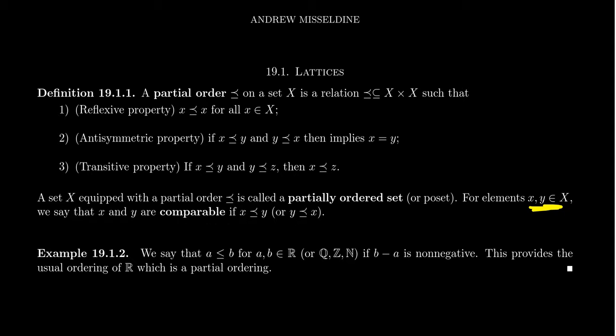The archetype of what a partial order is, is the partial order that exists on the real numbers. We say that two real numbers A and B satisfy this relationship: A is less than or equal to B whenever the difference B minus A is non-negative. So if the bigger number is subtracted by the smaller number, that gives you something positive. Of course, if they're equal, that gives you zero.